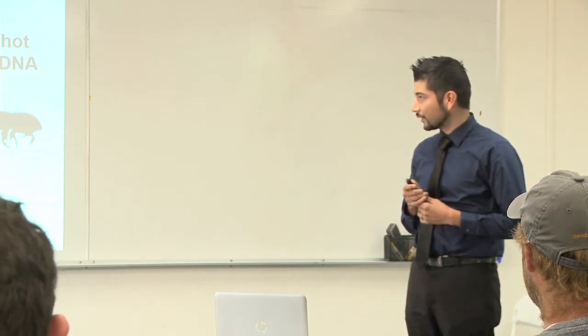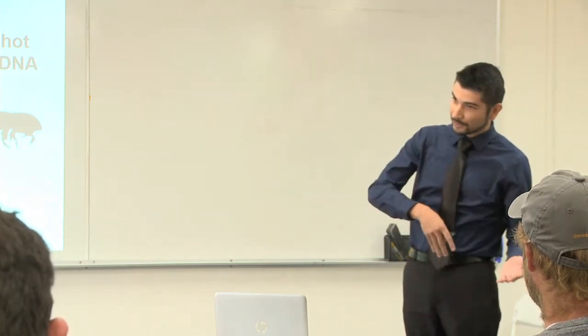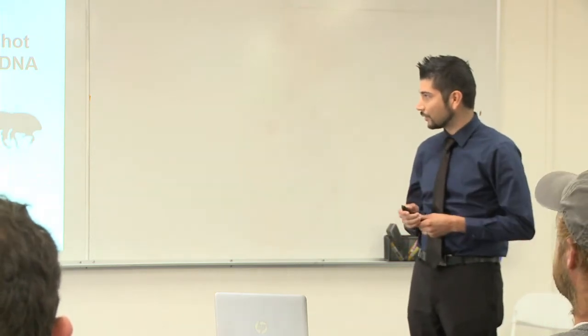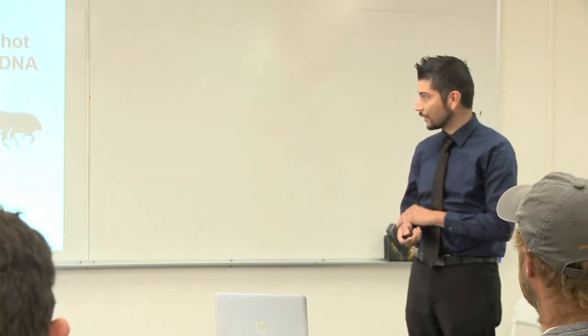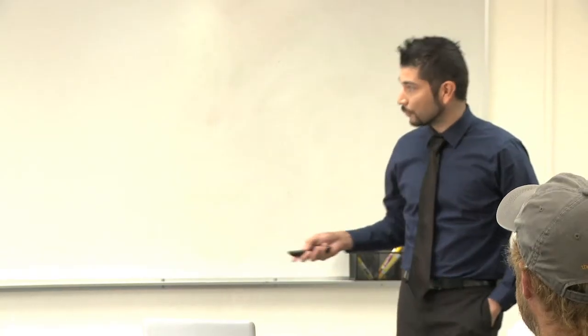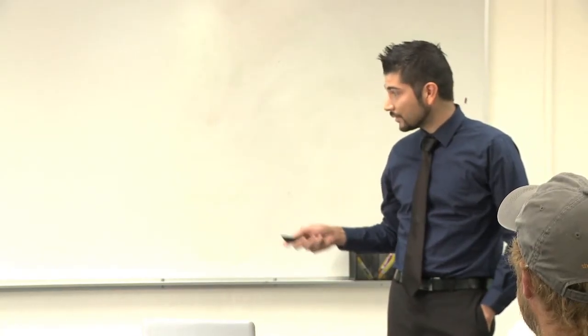This work was done in Akif Eskalen's lab while he was at UCR. He's now at UC Davis but is still involved in shot hole borer related research. There's a lot of overlap from what you just heard as far as the introduction, but shot hole borers are ambrosia beetles. They come from Southeast Asia, so they invaded this region. Their life cycle starts when a fertilized female will enter woody hosts and form these tunnels, which we call galleries.